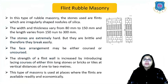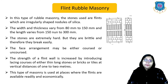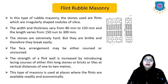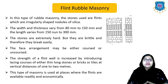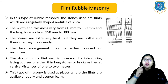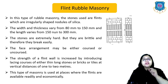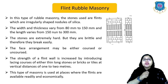The last type of rubble masonry is flint rubble masonry. The stones used are flints, which are irregularly shaped nodules of silica. The width and thickness vary from 80 to 150 mm and the length varies from 150 to 300 mm. The stones are extremely hard but brittle and therefore break easily. The face arrangement may be either coursed or uncoursed. The strength of a flint wall is increased by introducing lacing courses of thin long stones, brick or tiles at vertical distances of 1 to 2 meters.